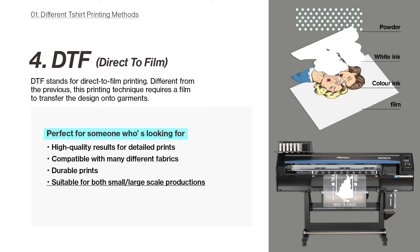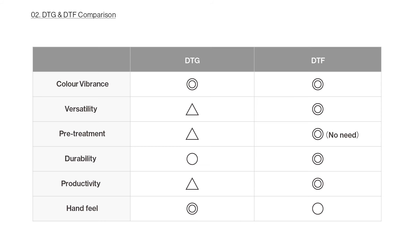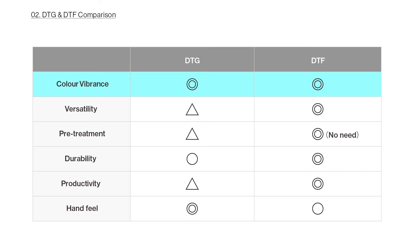Now let's dive into the detailed comparison of DTG and DTF. The main difference is that DTF requires a special DTF transfer film, while DTG prints directly onto the garment. When it comes to colour vibrance, both provide bright and vibrant colours. However, since DTG prints directly onto the garment, the colour can start to fade over time. DTF, on the other hand, uses a film as a design carrier and is known for vibrant colour and intricate details with a longer lifespan.